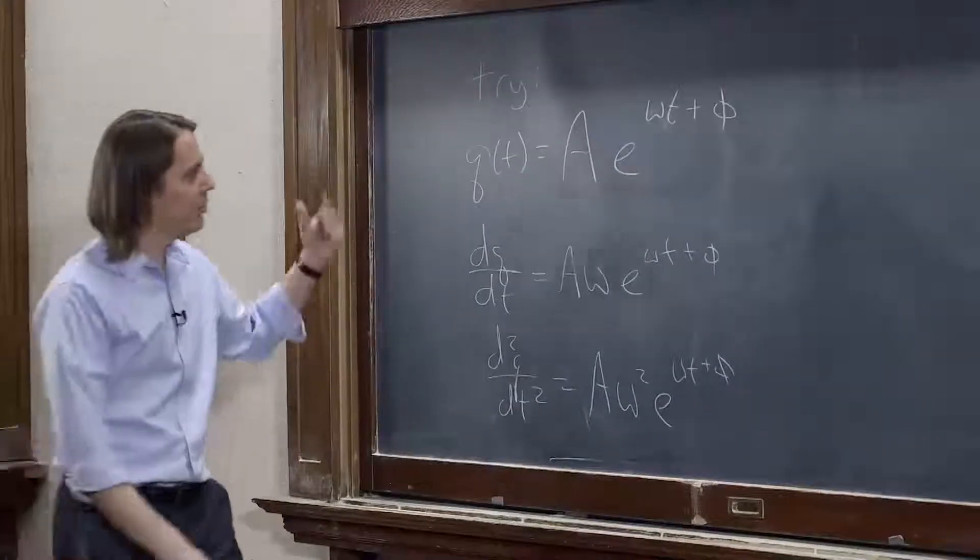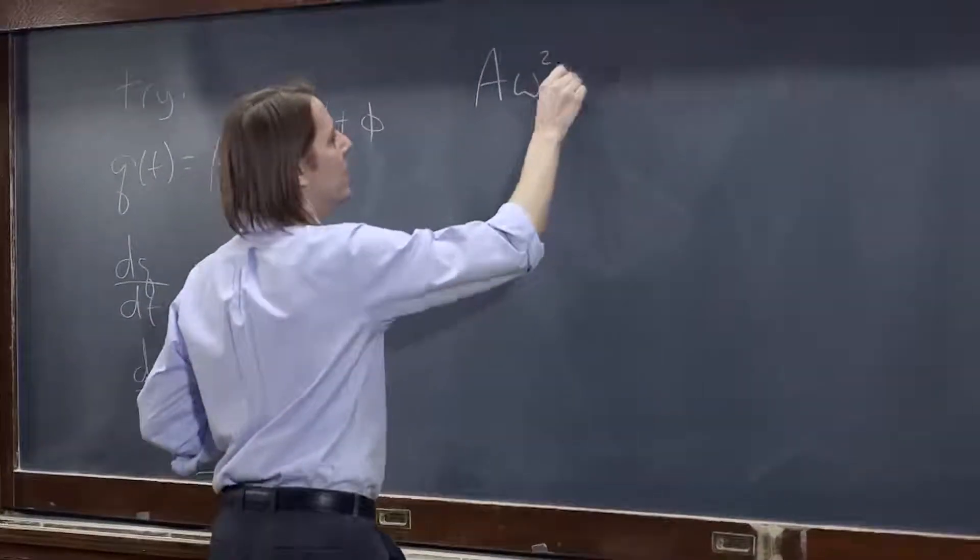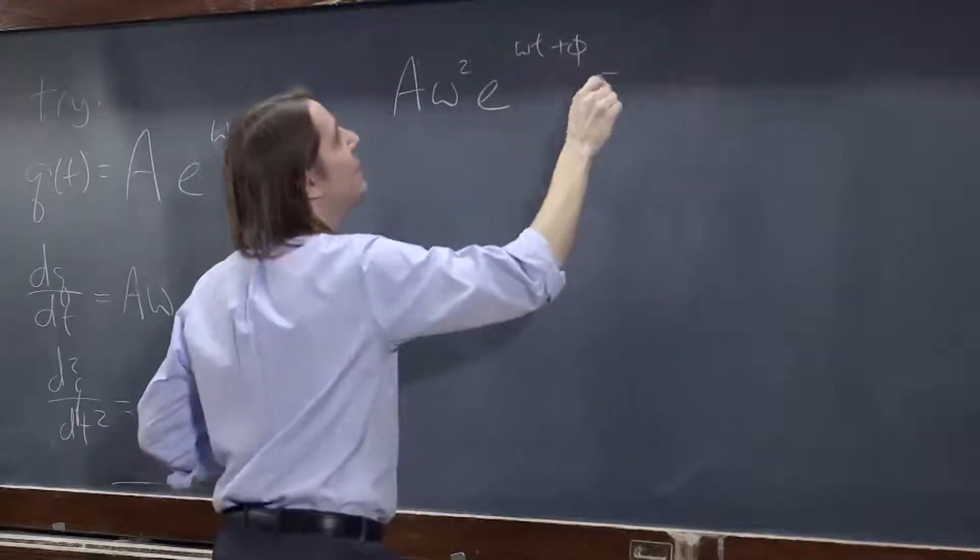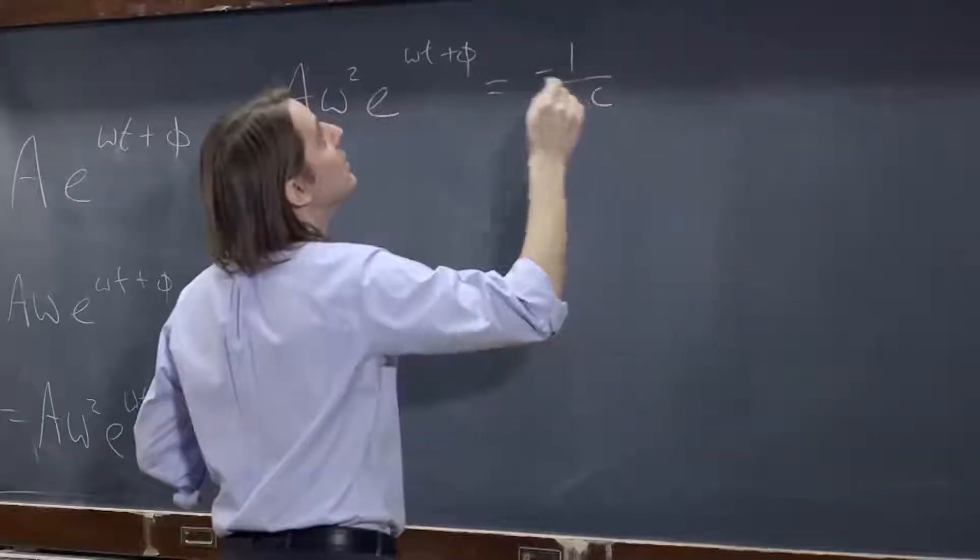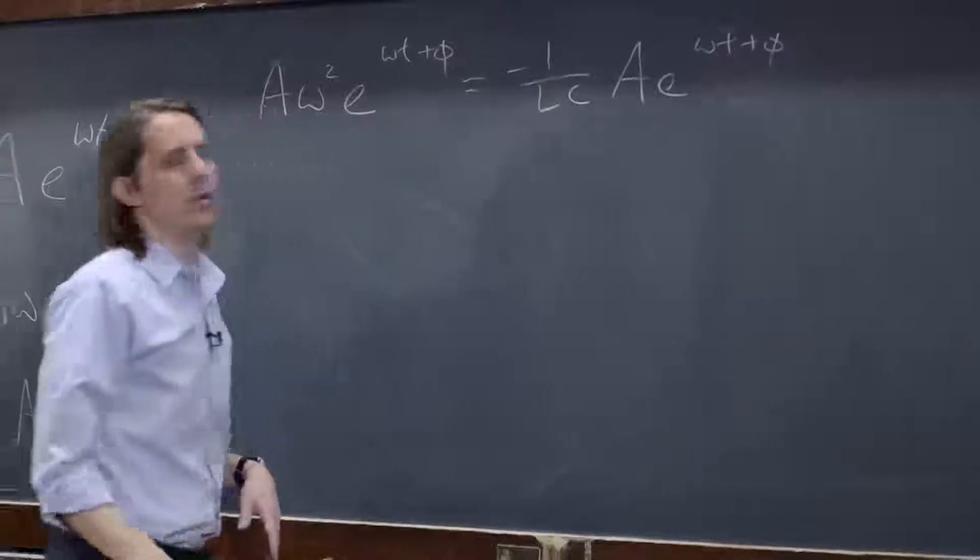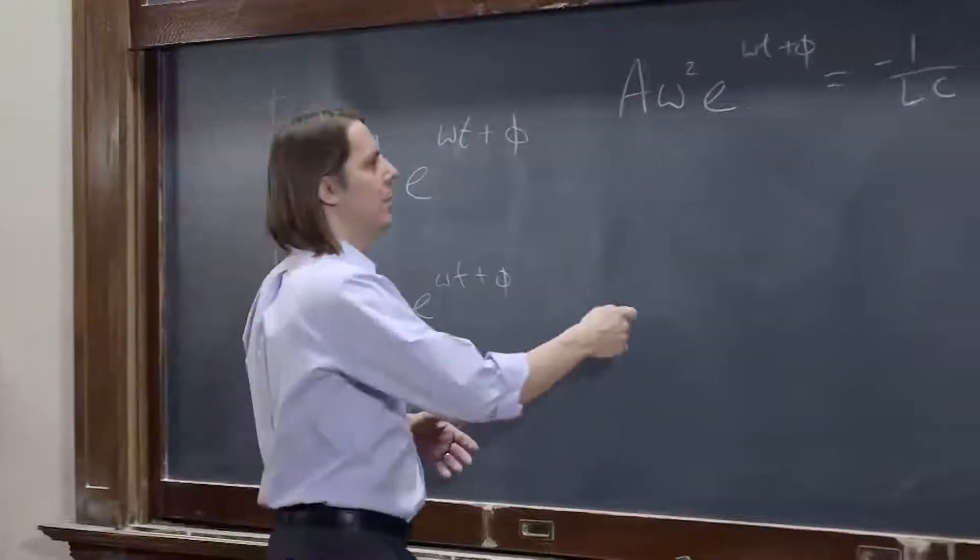All right, well let's just plug them in. So the second derivative was a omega squared e to the omega t plus phi equals minus one over lc times q, a e to the omega t plus phi.